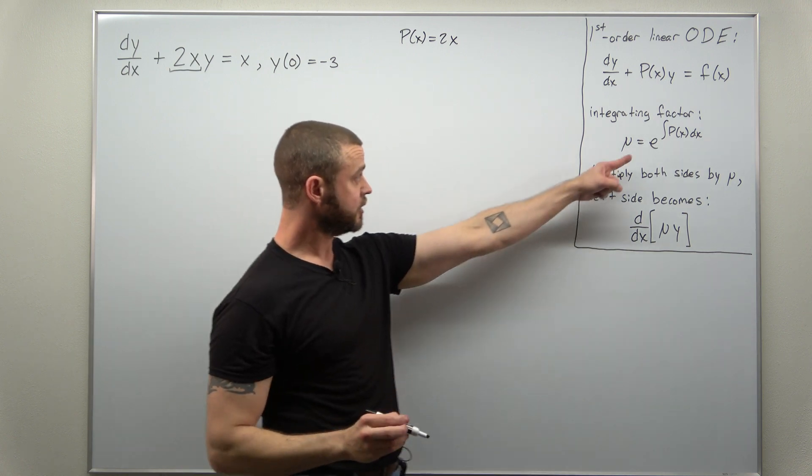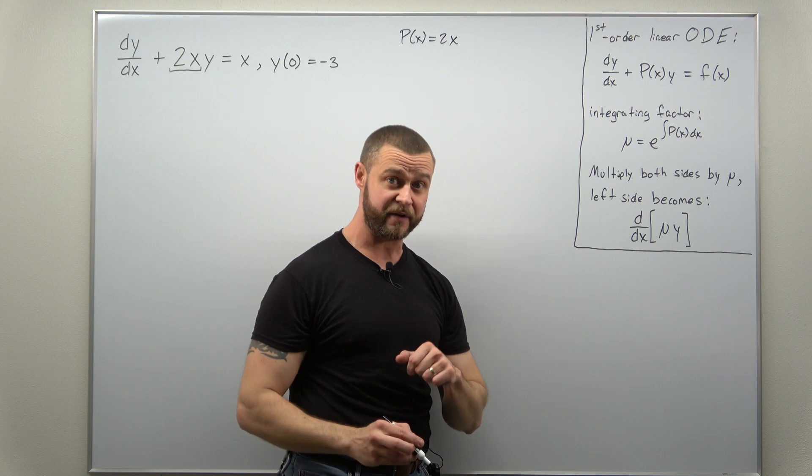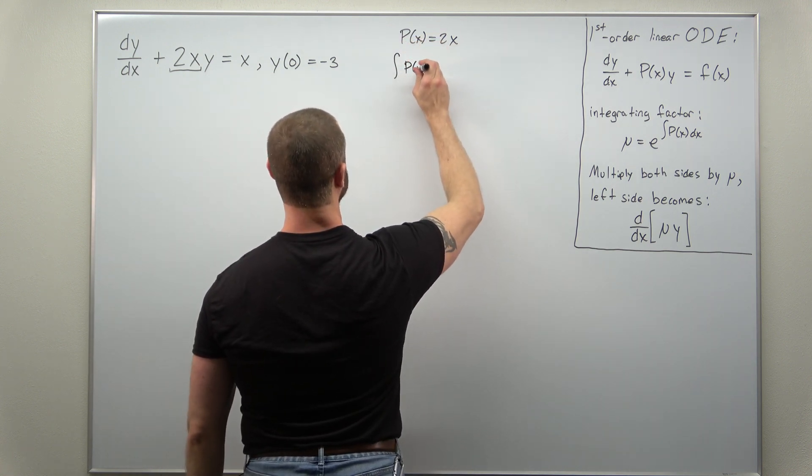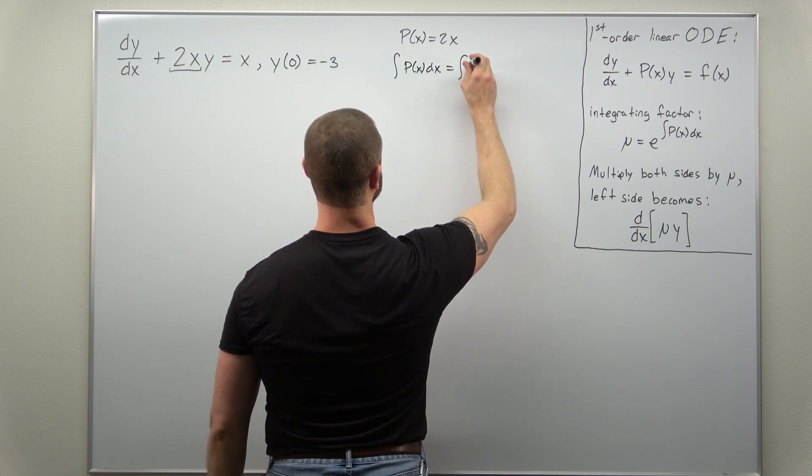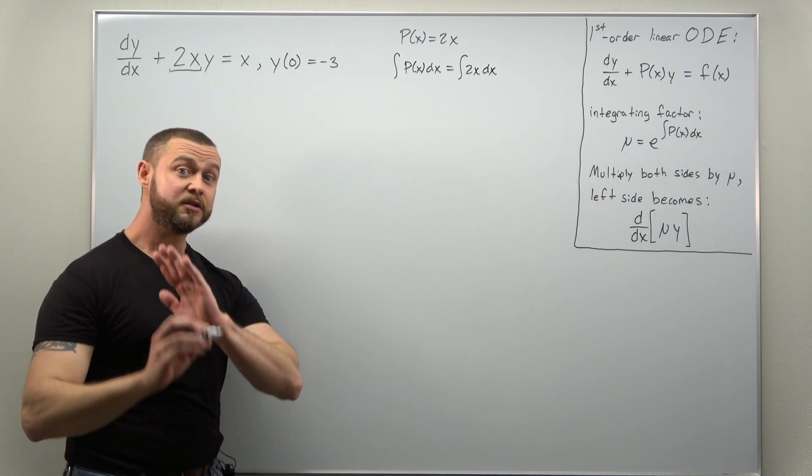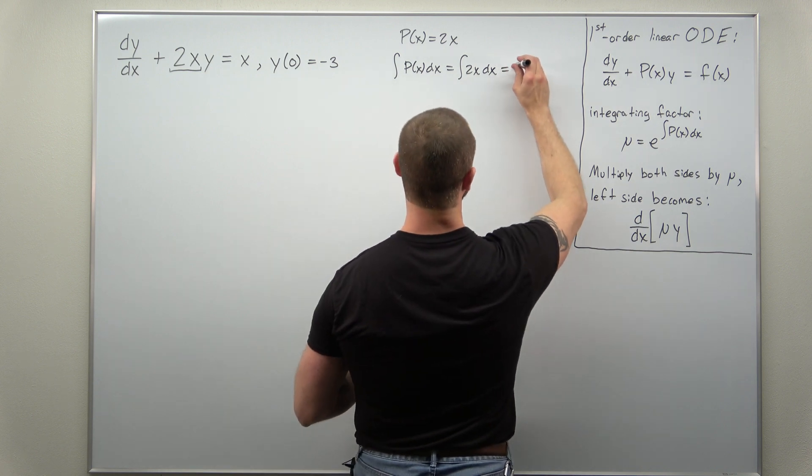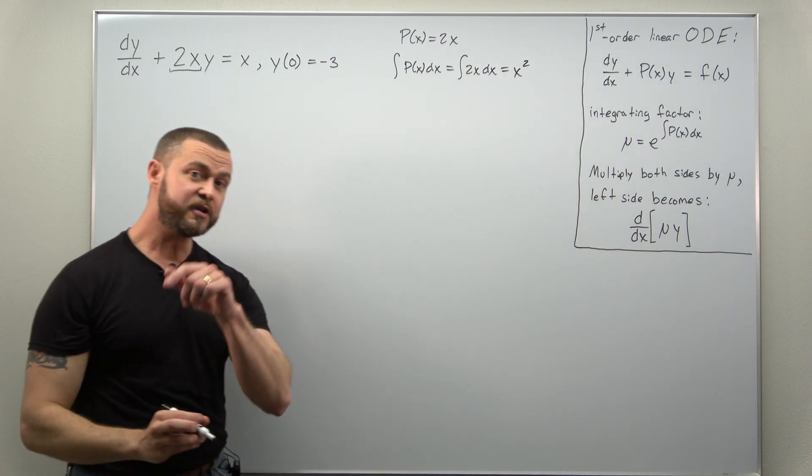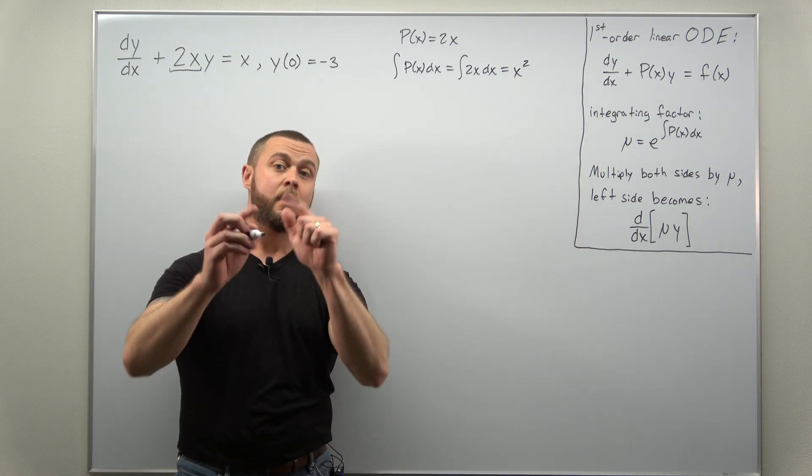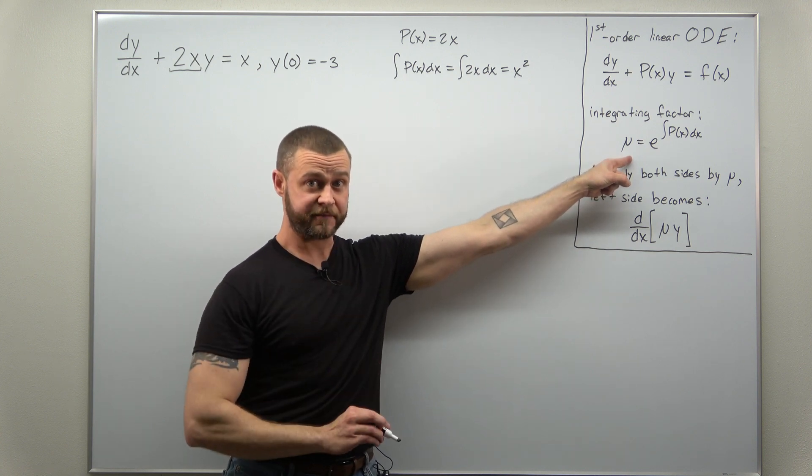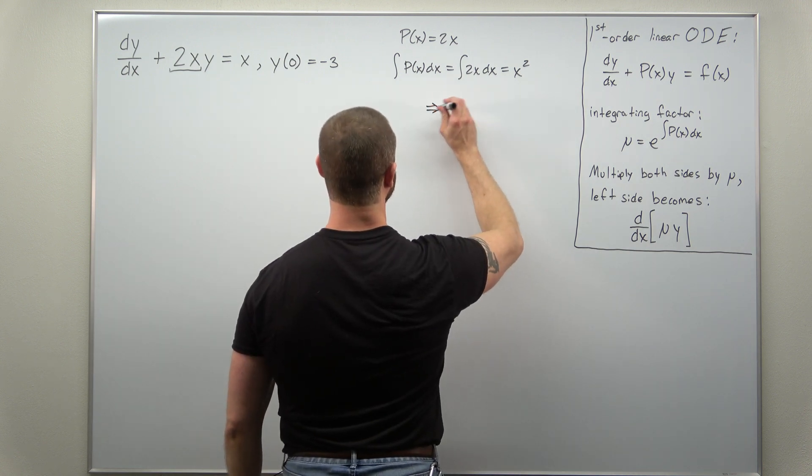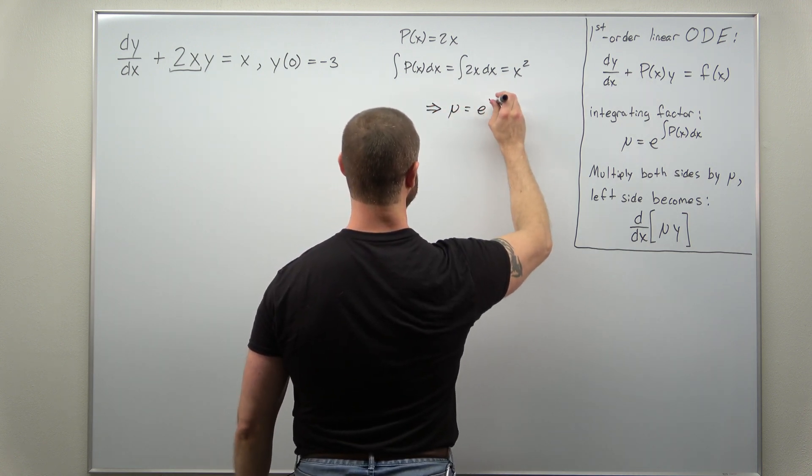Now for the integrating factor, we calculate the integral or anti-derivative of p of x. So take p of x and integrate it. And that's actually a really simple anti-derivative. It comes out to just x squared. And again we mentioned in the video linked down below that we don't need the plus c there in the formula for the integrating factor. So we can write down our integrating factor μ as e raised to the x squared.